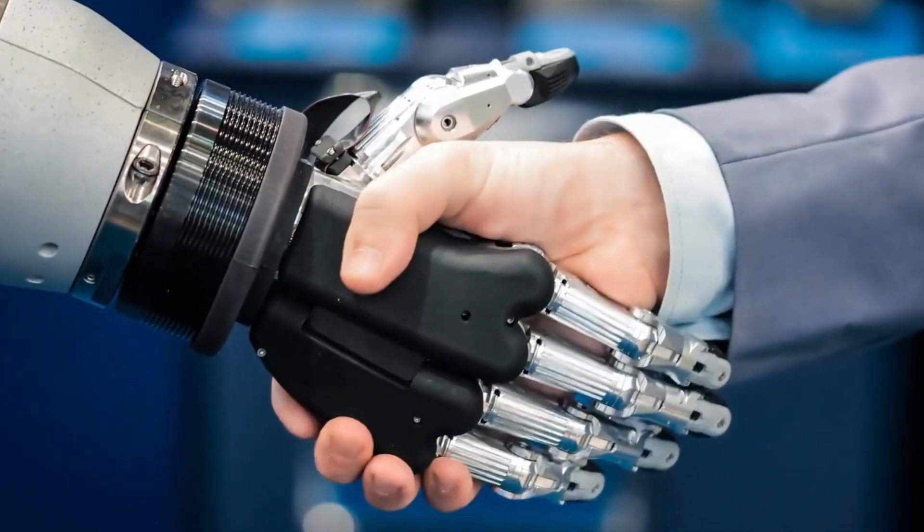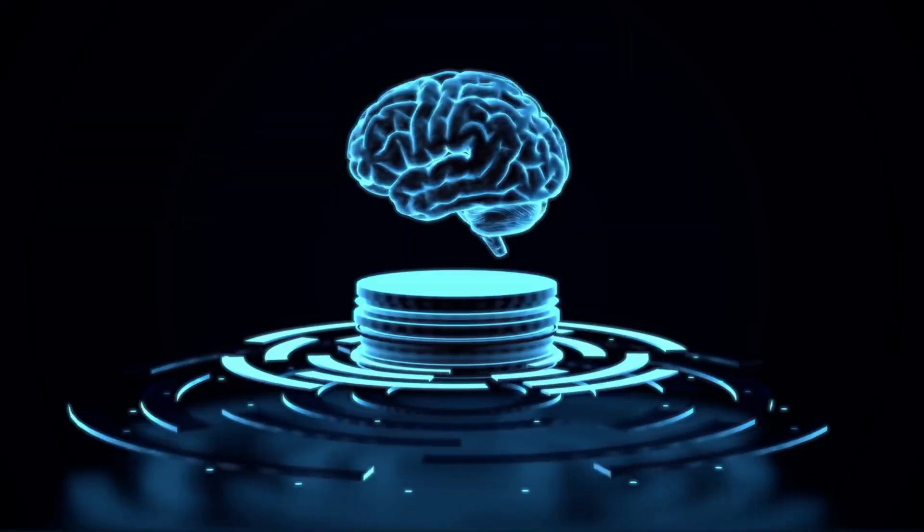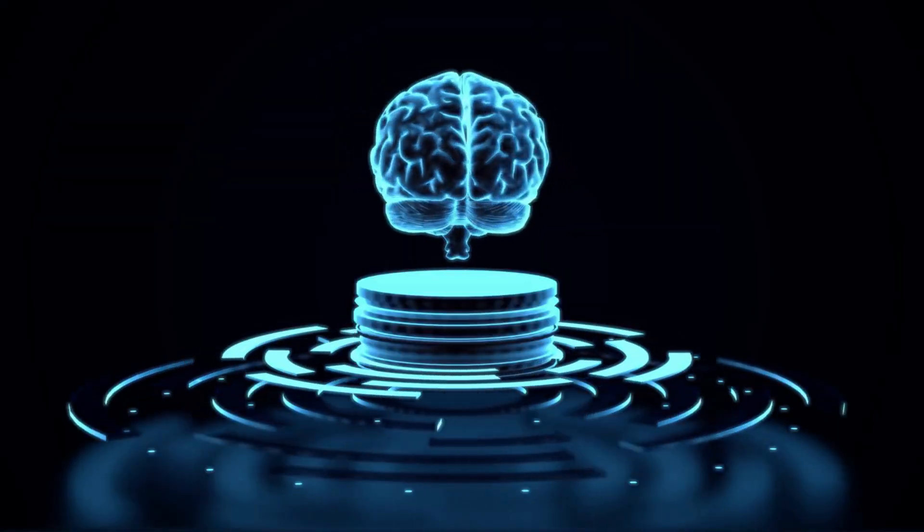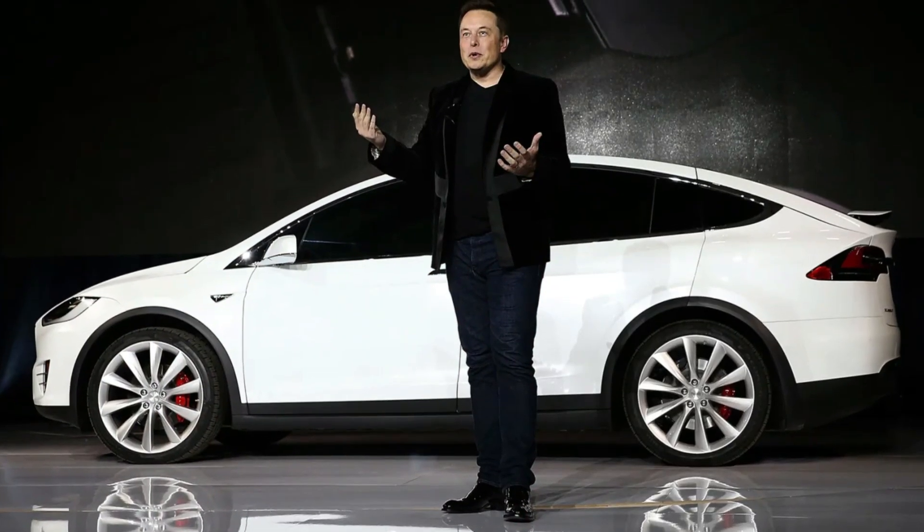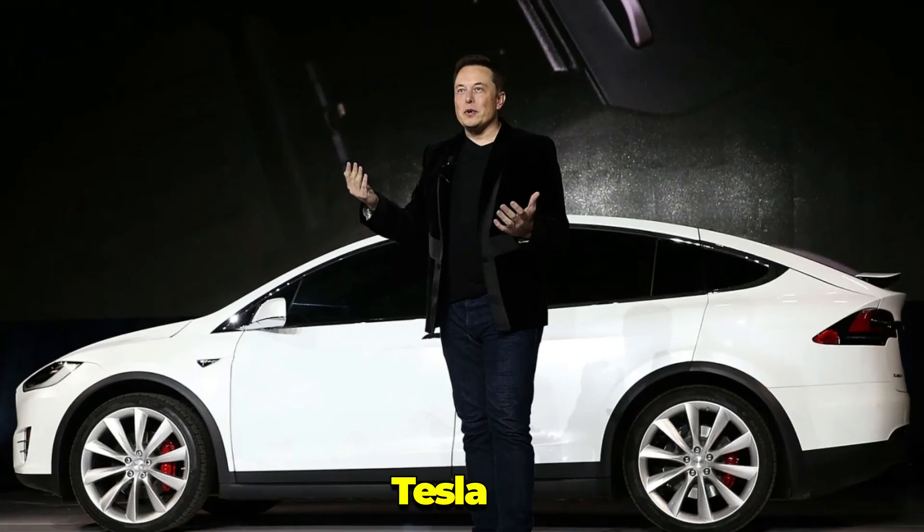Musk stated, with the right innovations, Twitter can evolve into a platform that empowers humanity. Central to this vision is artificial intelligence, a technology Musk has championed across his ventures from Tesla to SpaceX.